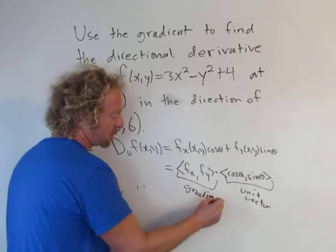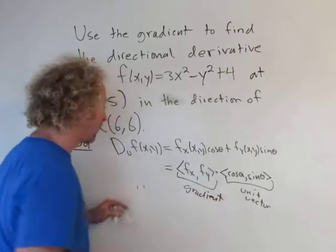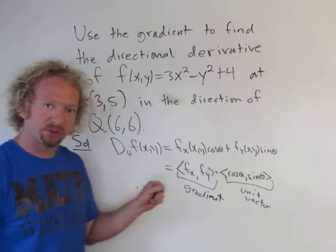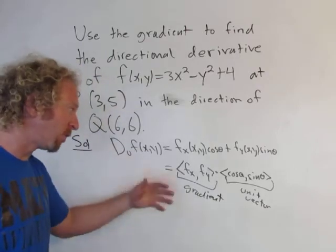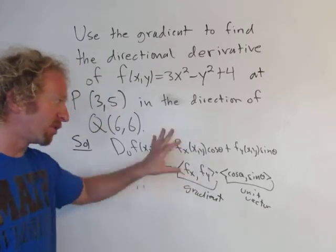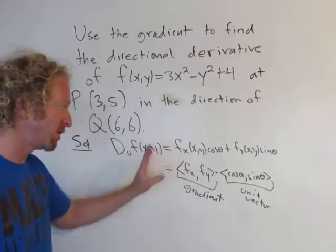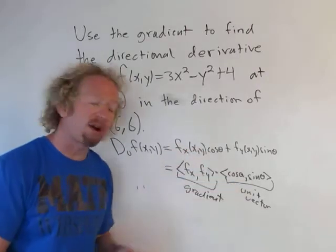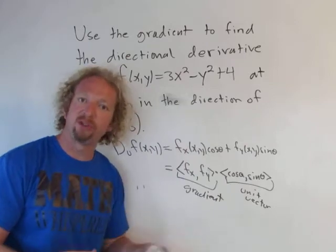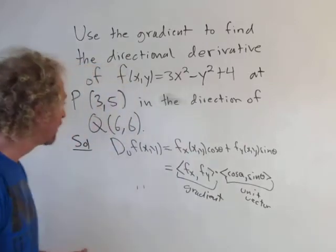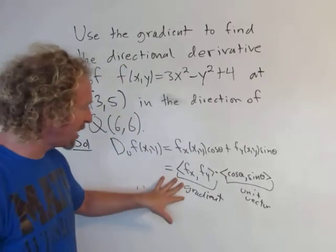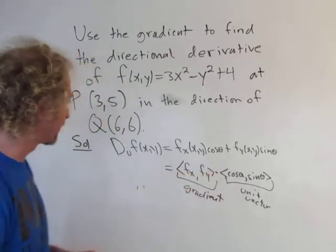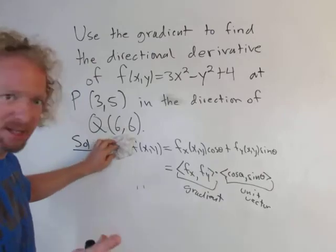In this problem, we're taking our old way of finding the directional derivative and doing it a different way. Instead, we're going to find the gradient, and then take the dot product of that with the unit vector. So I have to find the gradient and then a unit vector.